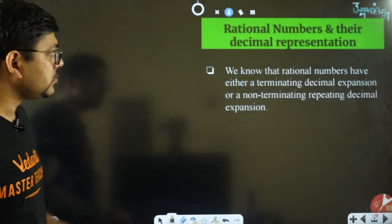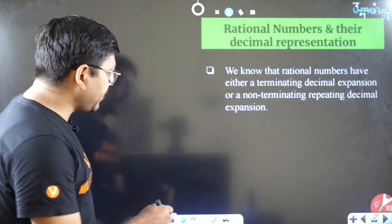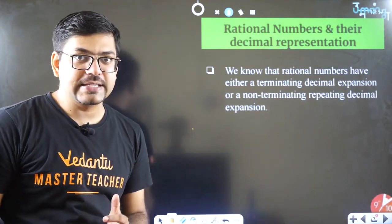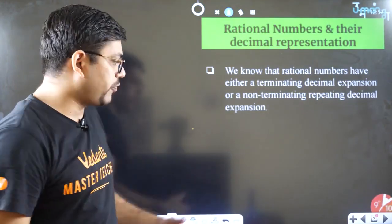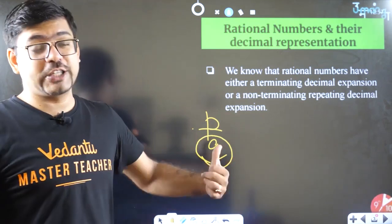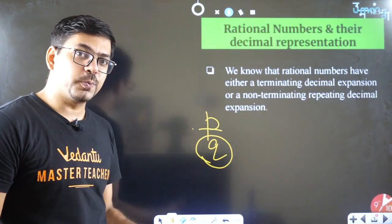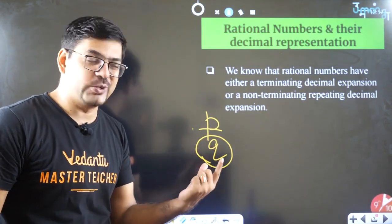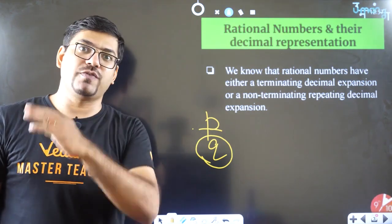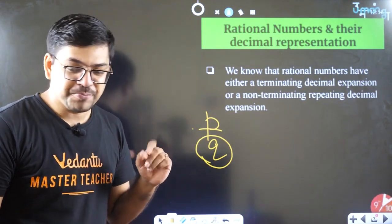For all decimal representations, what we look at is the denominator of any fraction. So if any fraction is in the form of p by q, we primarily focus on q, because q is going to give us the decimal representation. One important thing: p by q should be in its simplest form — no common factor remaining, so p and q should be co-primes.